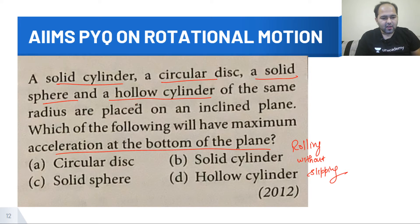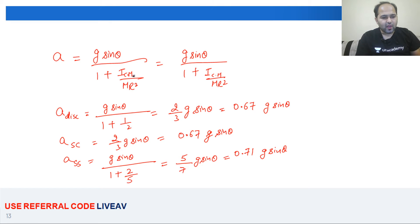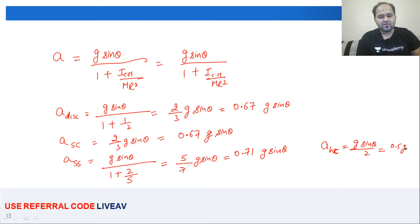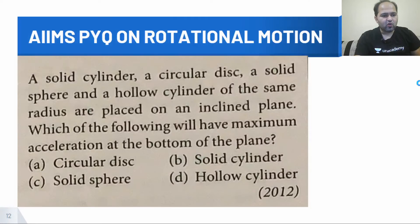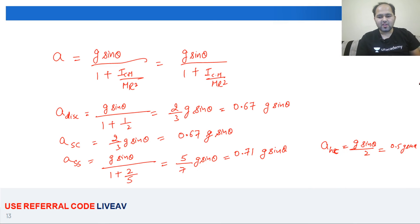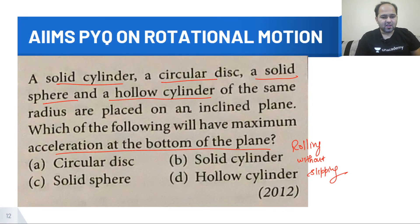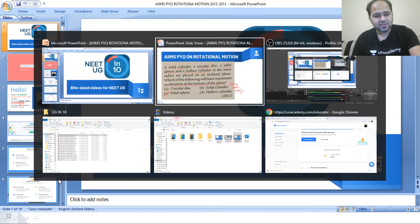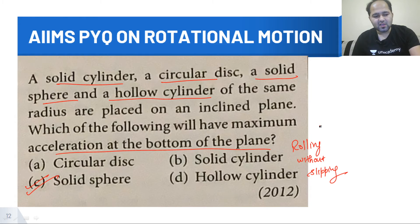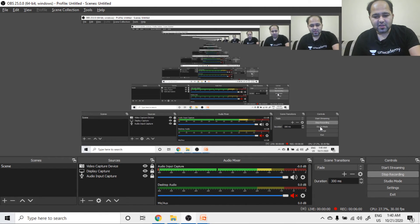Hollow cylinder का moment of inertia MR² होता है, तो acceleration = g sinθ / (1 + 1) = g sinθ / 2 = 0.5 g sinθ. चार bodies थीं — hollow cylinder (0.5), solid cylinder/disc (0.67), solid sphere (0.71). सबसे ज़्यादा acceleration solid sphere का है. तो C option will be your answer — solid sphere.